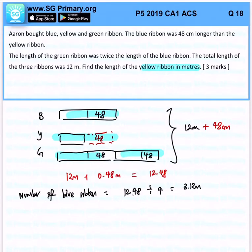Now we are interested to find out how many yellow ribbons are there. So the length of the yellow ribbon... let me make an error here. This is the length of blue ribbon. The length of the yellow ribbon would be simply 3.12 meters minus 0.48 meters.